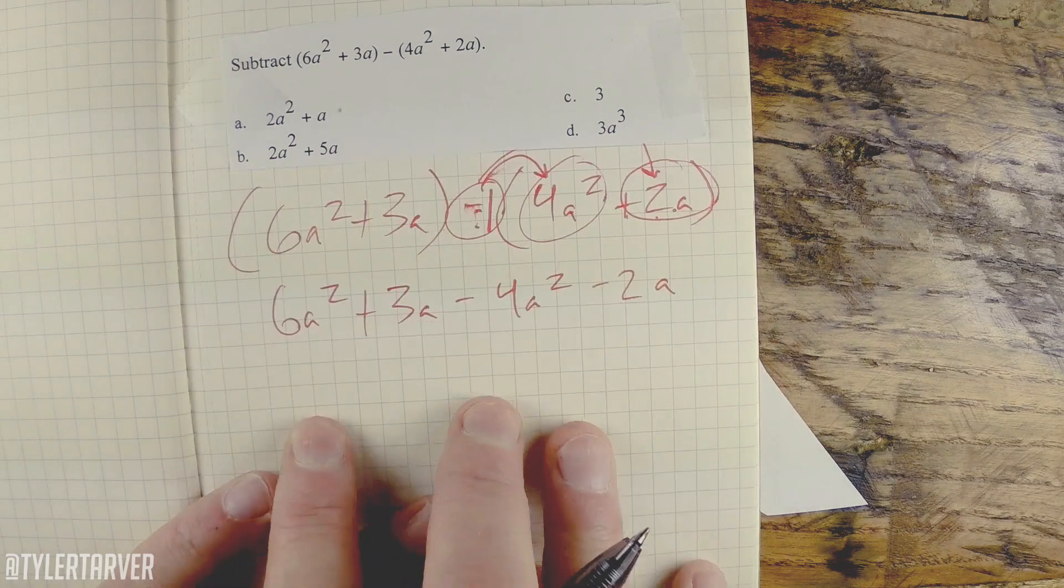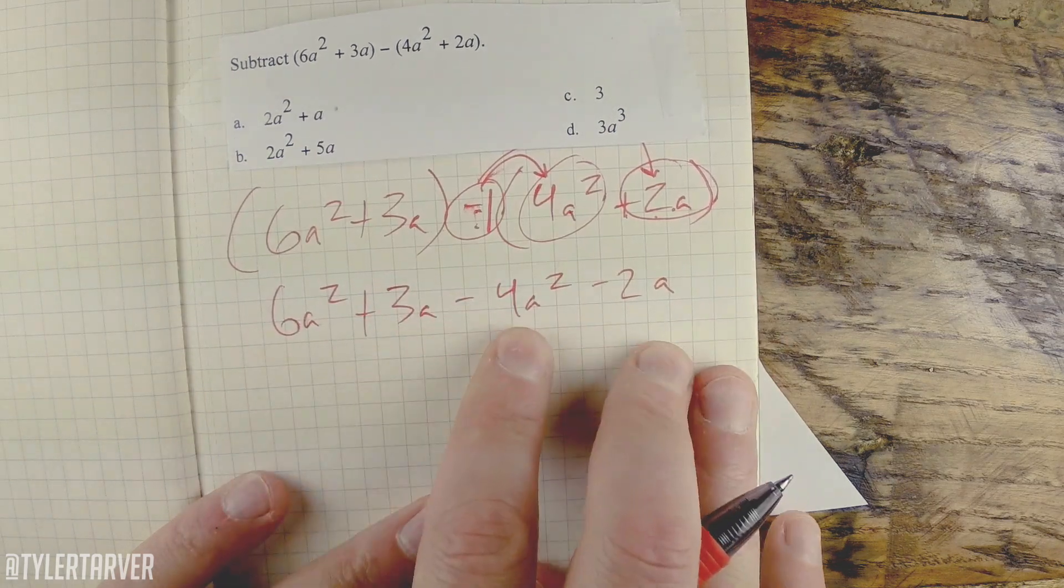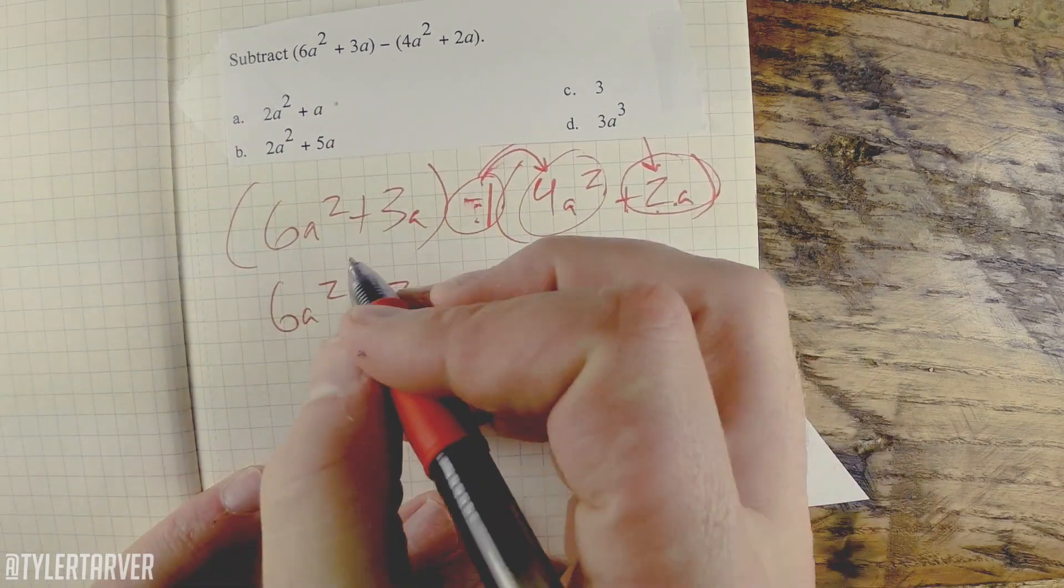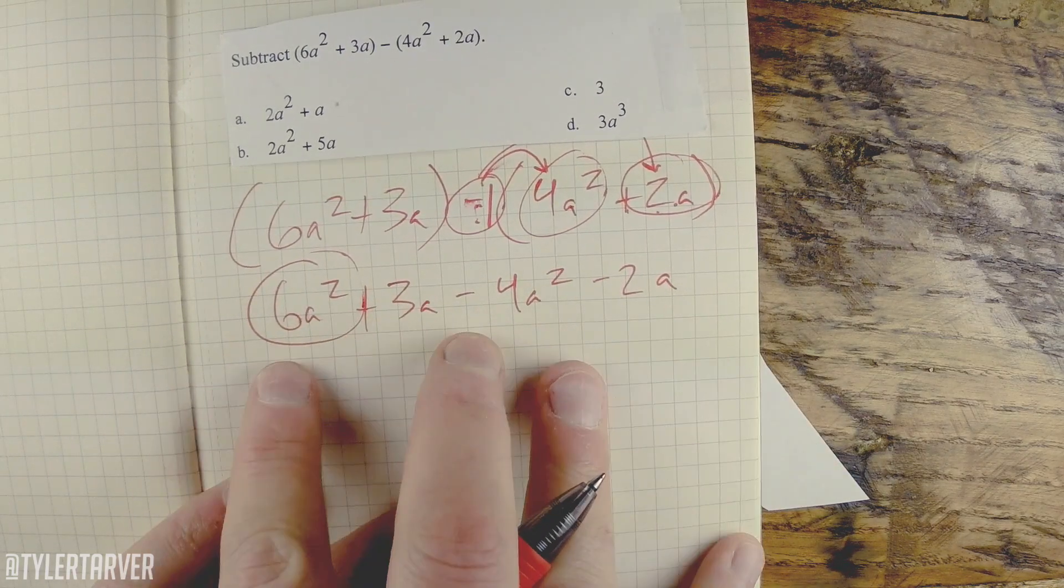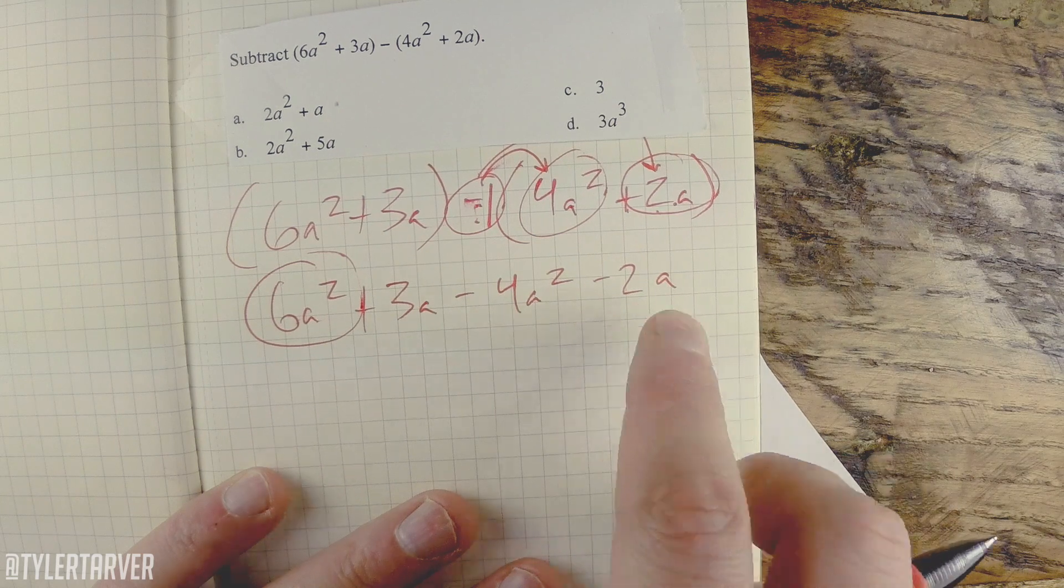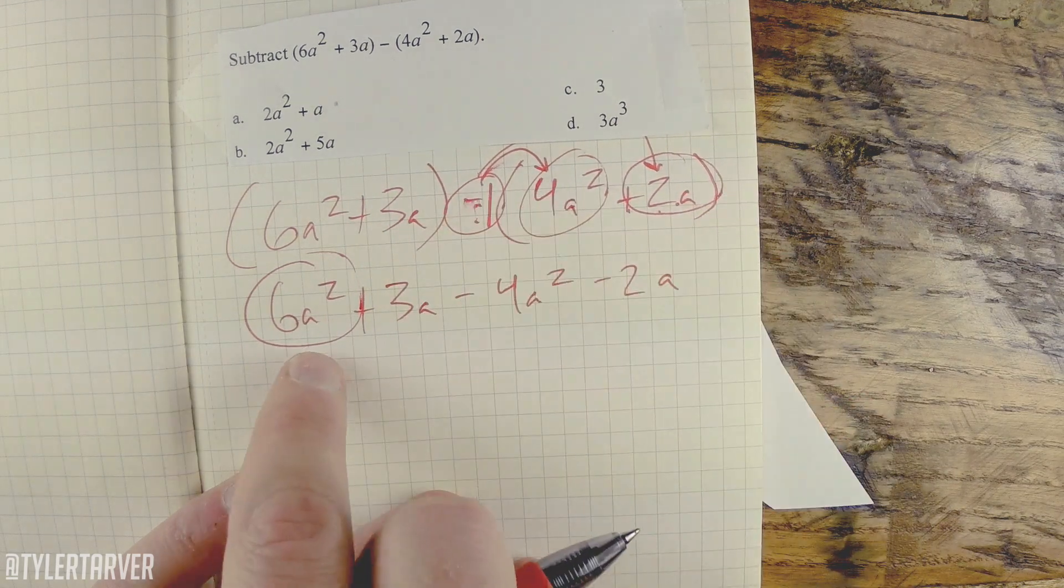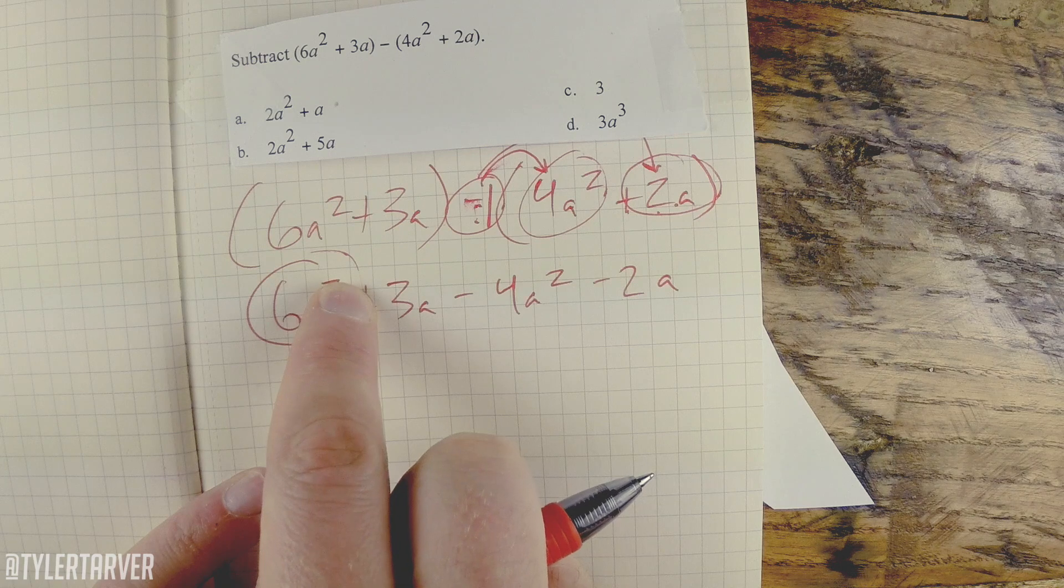After this you're really just simplifying. You can't solve it because we don't know what a is and there's no equal sign, but we can simplify it. The key thing to remember when you're simplifying is you cannot add or subtract these monomials unless they have the exact same variable with the exact same exponent.